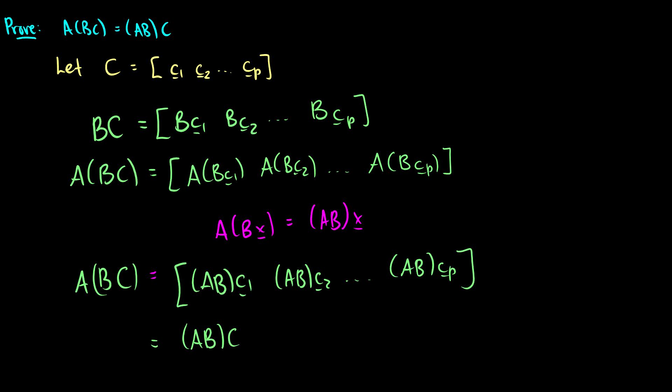You might have forgotten this word — this is the associative principle. It shows that as long as you keep the matrices in order, you can group them together however you like to perform the operation first. The other proofs follow the same method, so we'll move on.